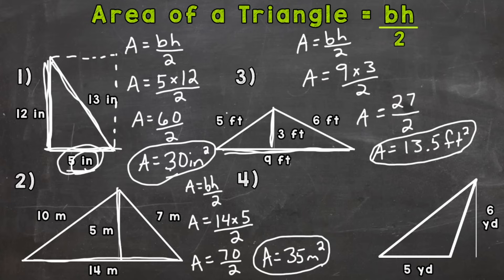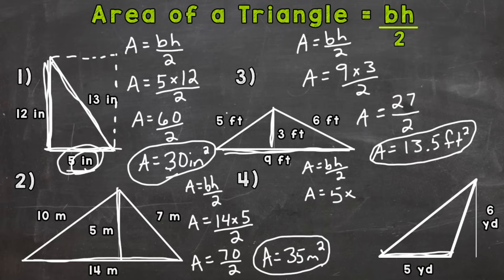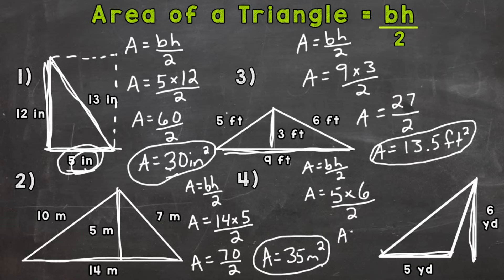And lastly, number 4. We start with the formula: area equals base times height divided by 2. Now we need to plug in. Our base is 5 yards, and we multiply it by our height. The height is outside the triangle because we need to see how tall it is — due to the shape of the triangle we have that measurement outside, but it still is the height. So 5 yards times 6 yards, divided by 2. Area equals 30 divided by 2, which gives us 15 square yards.